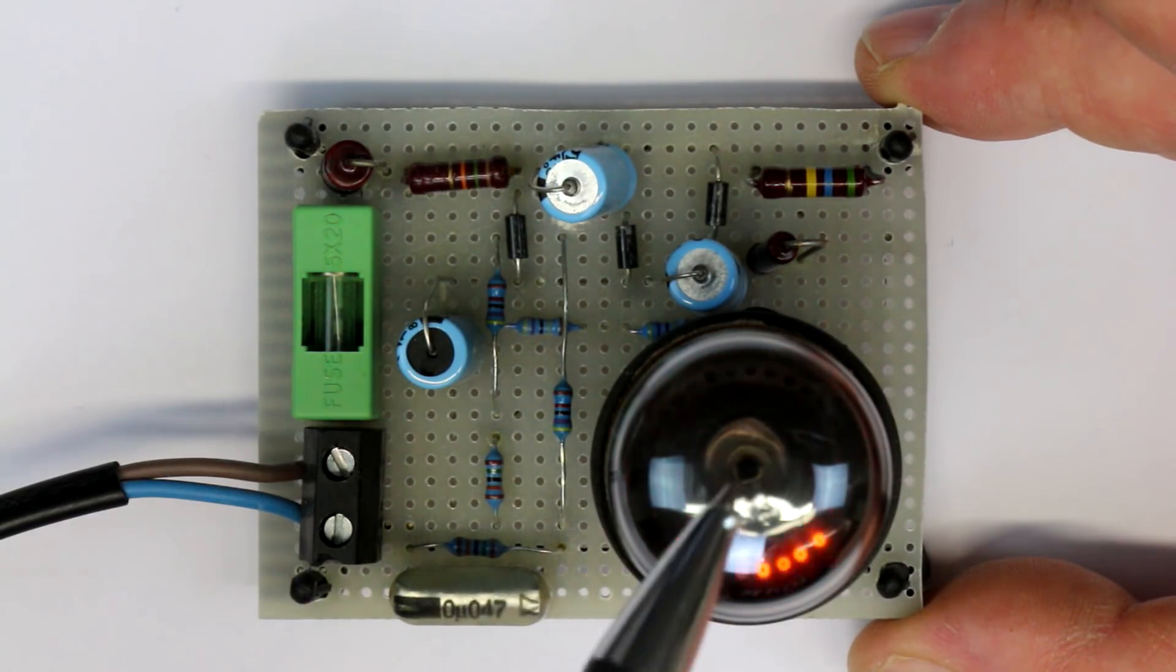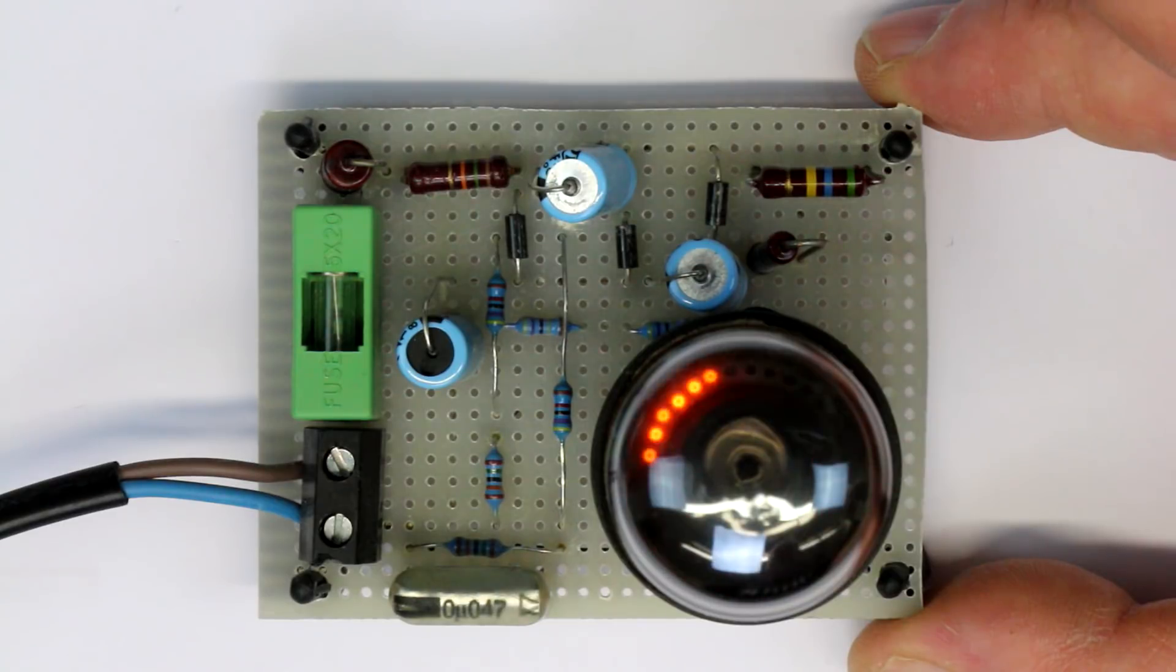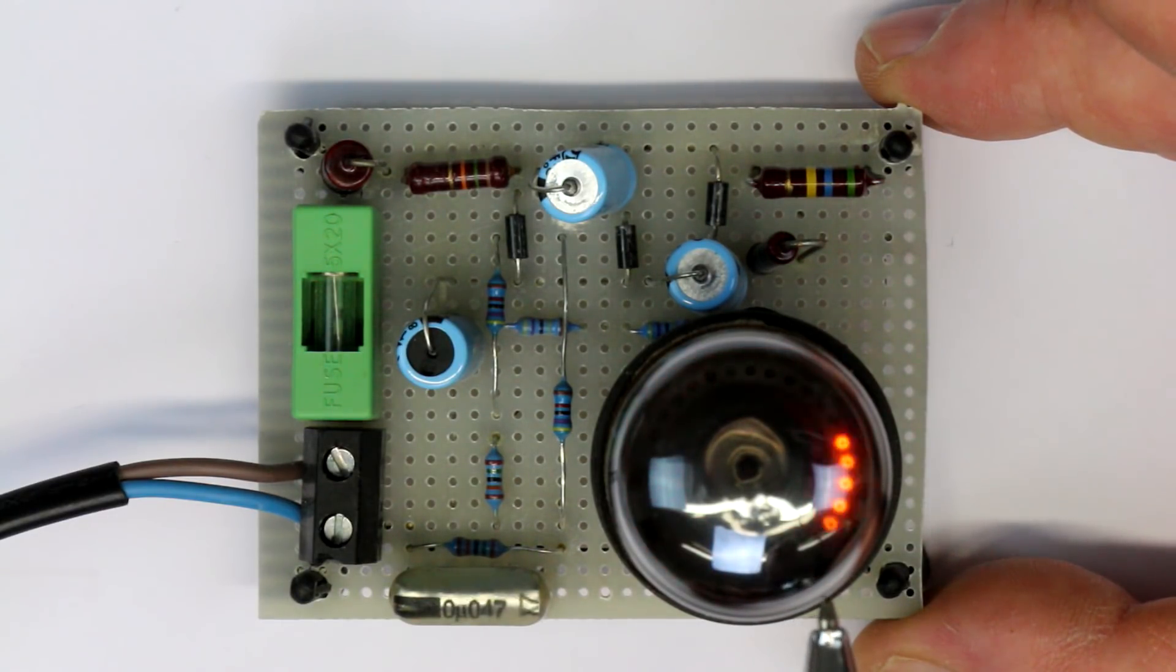So the principle is you have a lot of anodes built around in a circle, and you have for each anode a kind of trigger anode, and when you give a trigger pulse then the glow is transferred from one glowing anode or cathode to the next one.